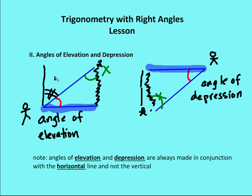So if you were to measure the angle formed with the vertical line as part of your trig function in determining the height of some object, you would be using the wrong angle. You need to use the angle that's formed with the horizontal and the line of sight looking up to the top. We use trigonometry to figure out distances and angle measures based on having just a couple pieces of information.